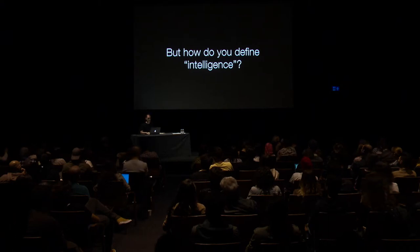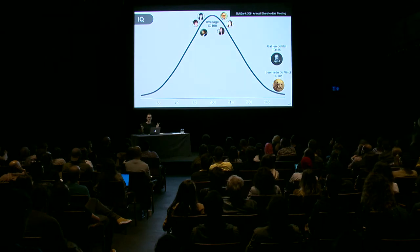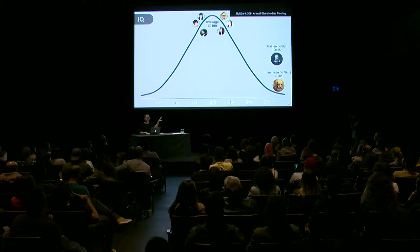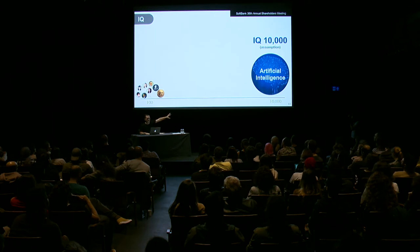What do we mean by intelligence? It's not so clear. Maybe you think of intelligence like IQ, where some people have more, most people are average, and some are on the other end. SoftBank, the Japanese company, has a very interesting deck for shareholders showing their plan for the next hundred years. They say artificial intelligence is way smarter than any of us — if we're around 100, AI is like 10,000. I think this is really naive; it's a simplistic view of intelligence that doesn't mirror how most people think about it.